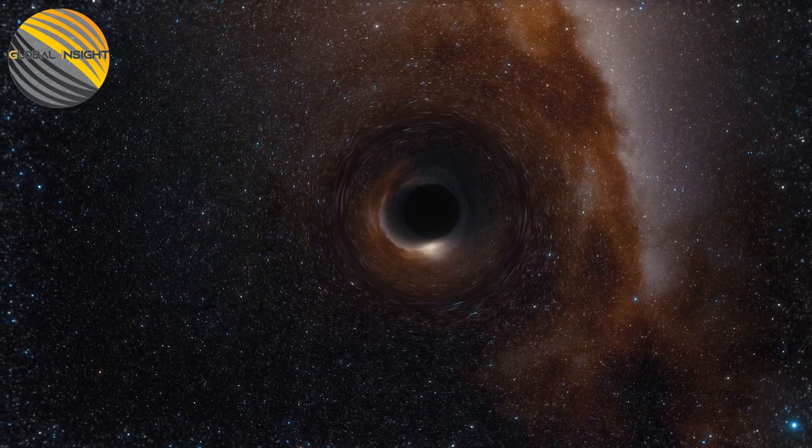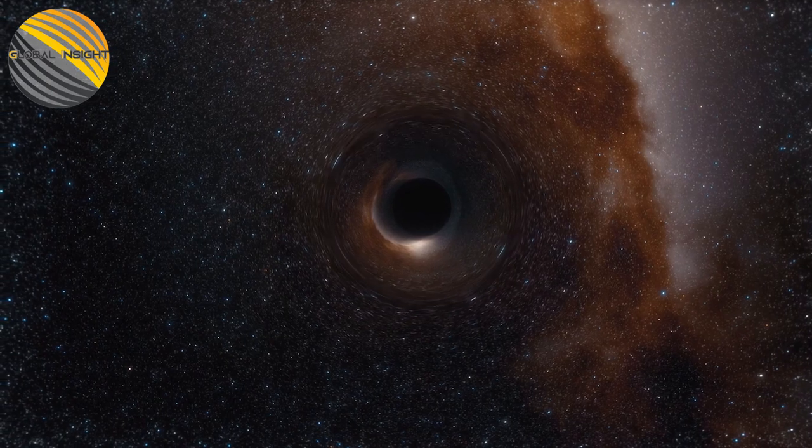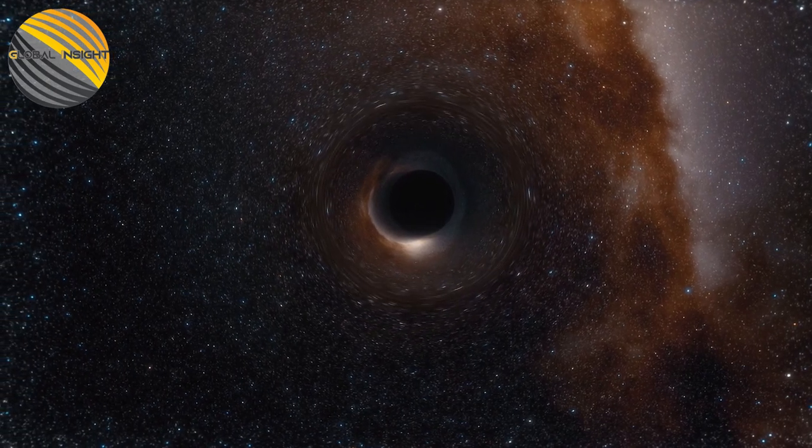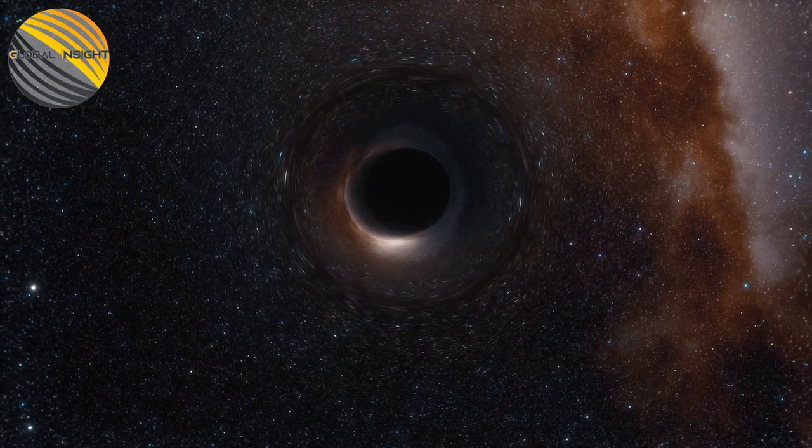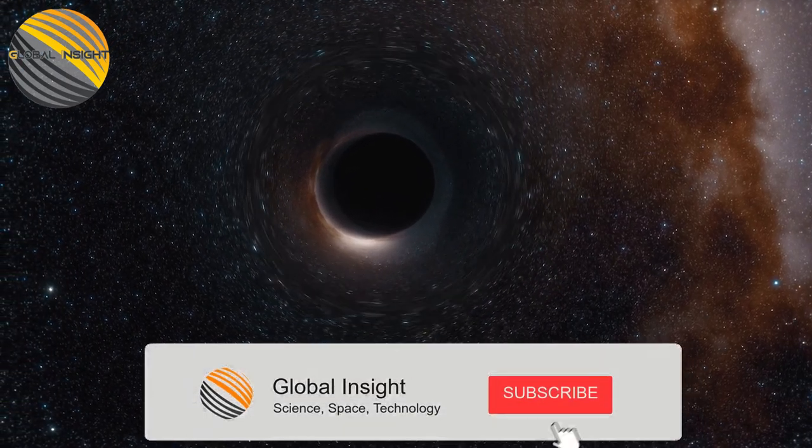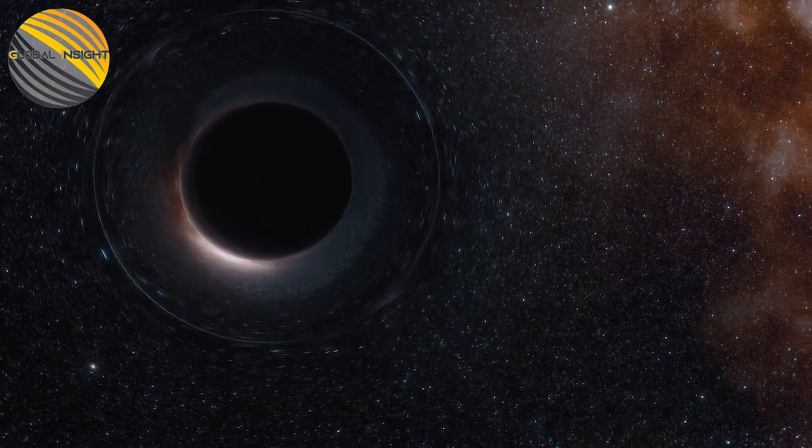Black holes formed by the collapse of individual stars are generally small, yet at the same time incredibly thick. One of these objects packs multiple times the mass of the sun into the measurement of a city.